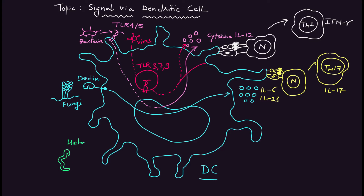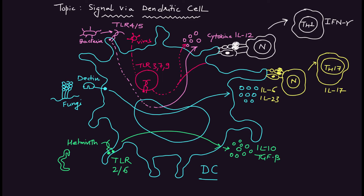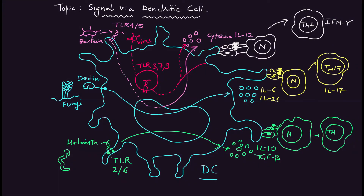For the third pathogenic organism — helminths (parasitic worms) — they are detected by toll-like receptors 2 and 6. Via the cellular signaling pathway, this produces interleukin-10 and TGF-beta. The antigenic molecules from these worms are also presented by MHC receptors to naive T-cells, which differentiate into the Th2 subset, causing production of interleukin-4, interleukin-5, and interleukin-13.